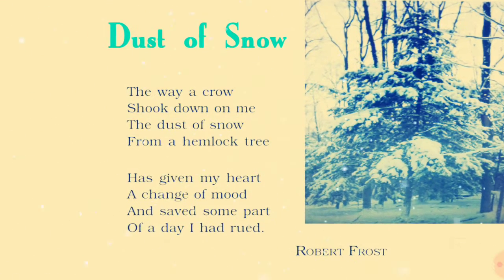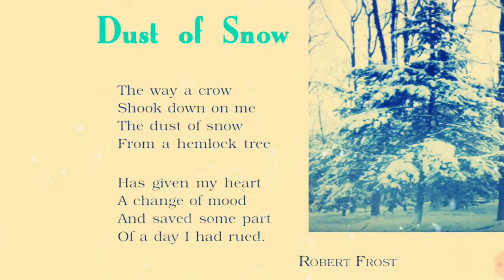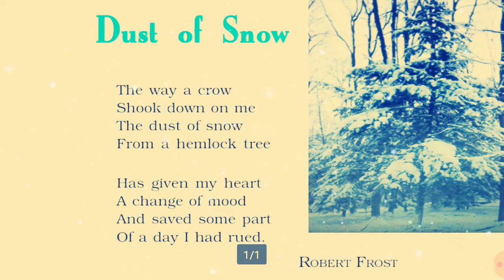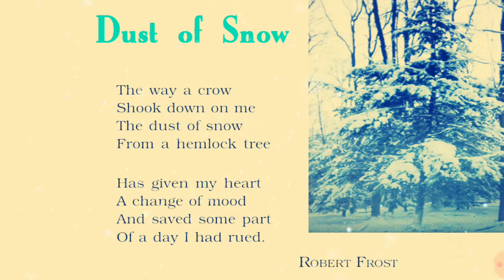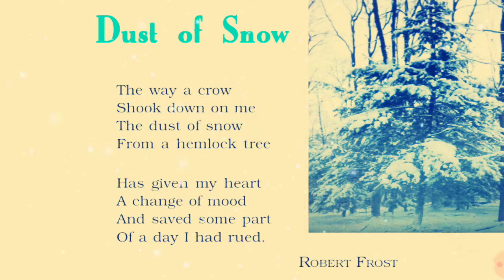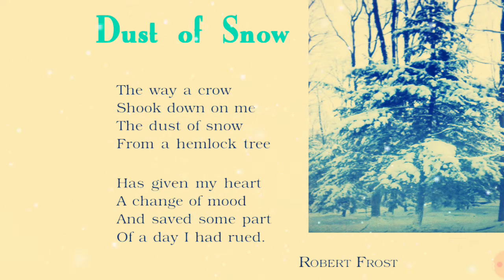If we make a rhyme scheme: crow and snow will be A, A, and me and tree will be B, B. So the rhyme scheme of the first four lines will be A, B, A, B.